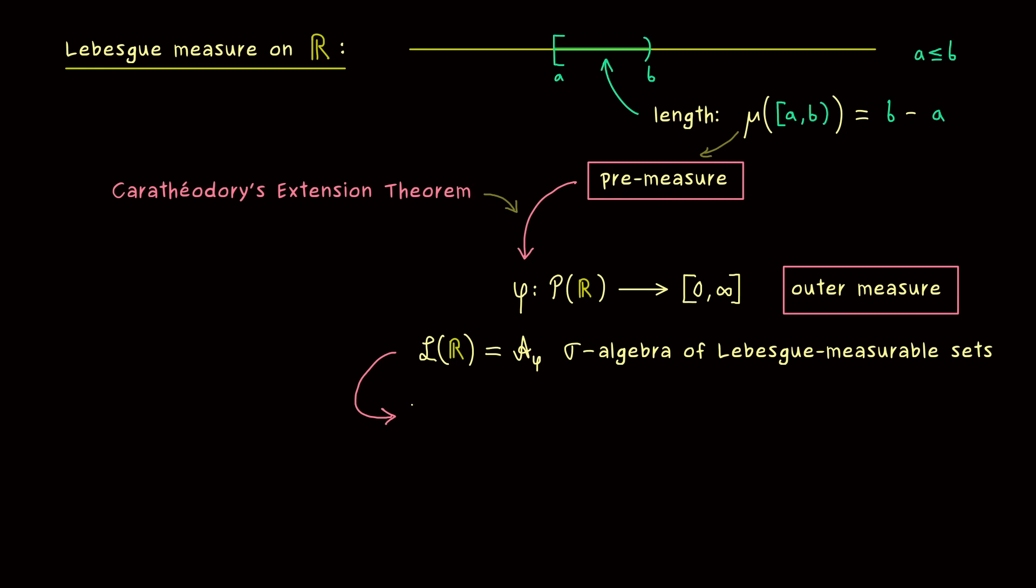Hence, what we get here is what we call the Lebesgue measure and denote by lambda. And it is defined on this whole sigma algebra L of R. So this is what we want. This is our one-dimensional Lebesgue measure. And it does exactly what we want. It generalizes the measurement of lengths of intervals. So after this whole construction procedure, we can forget about the other notions, because we just need this notion measure.